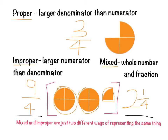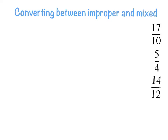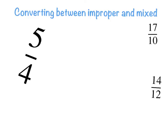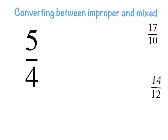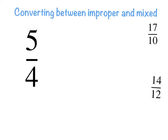Now we're going to learn how to convert improper fractions to mixed numerals, and mixed numerals back to improper fractions. Let's start with converting improper fractions to mixed numerals. Here's an example: five over four. I know it's an improper fraction because the numerator is greater than the denominator. First, we look at the denominator and ask how many times it goes into the numerator.